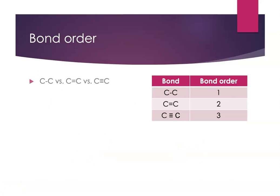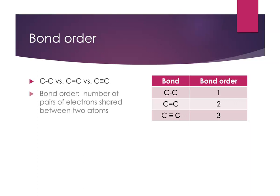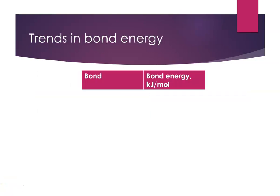Sometimes we like to talk about a term called bond order. If we're looking at a carbon-carbon single bond versus a double bond versus a triple bond, the single bond has a bond order of one, a double bond has a bond order of two, and a triple bond has a bond order of three. We're really discussing how many pairs of electrons are being shared between those two atoms.